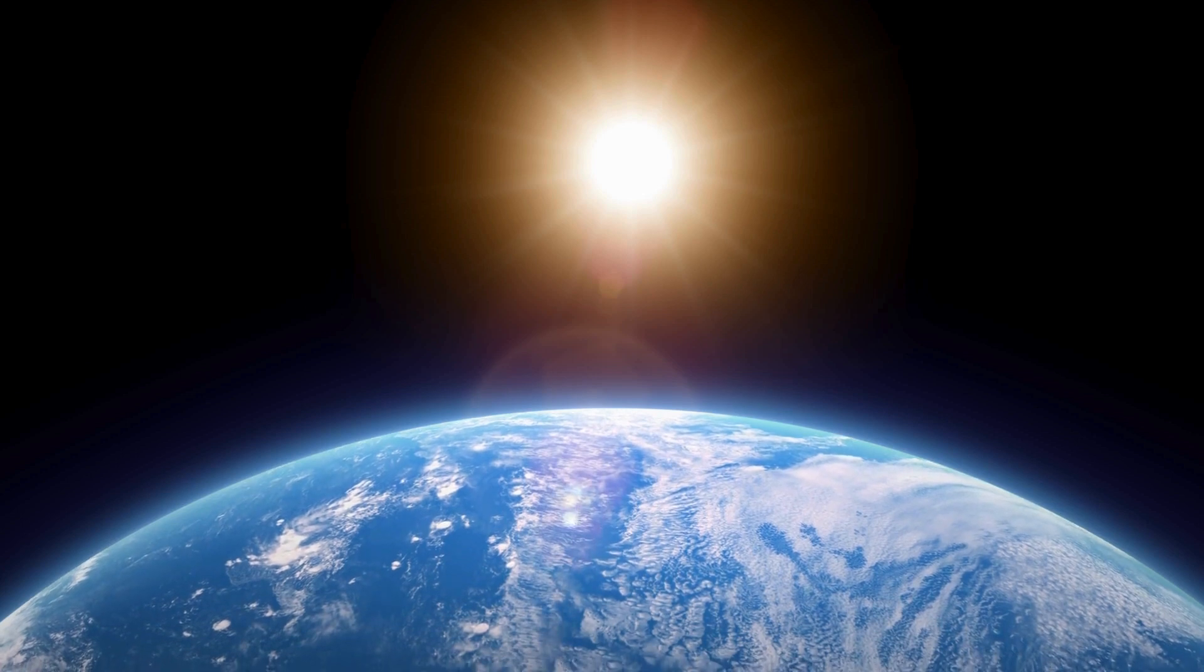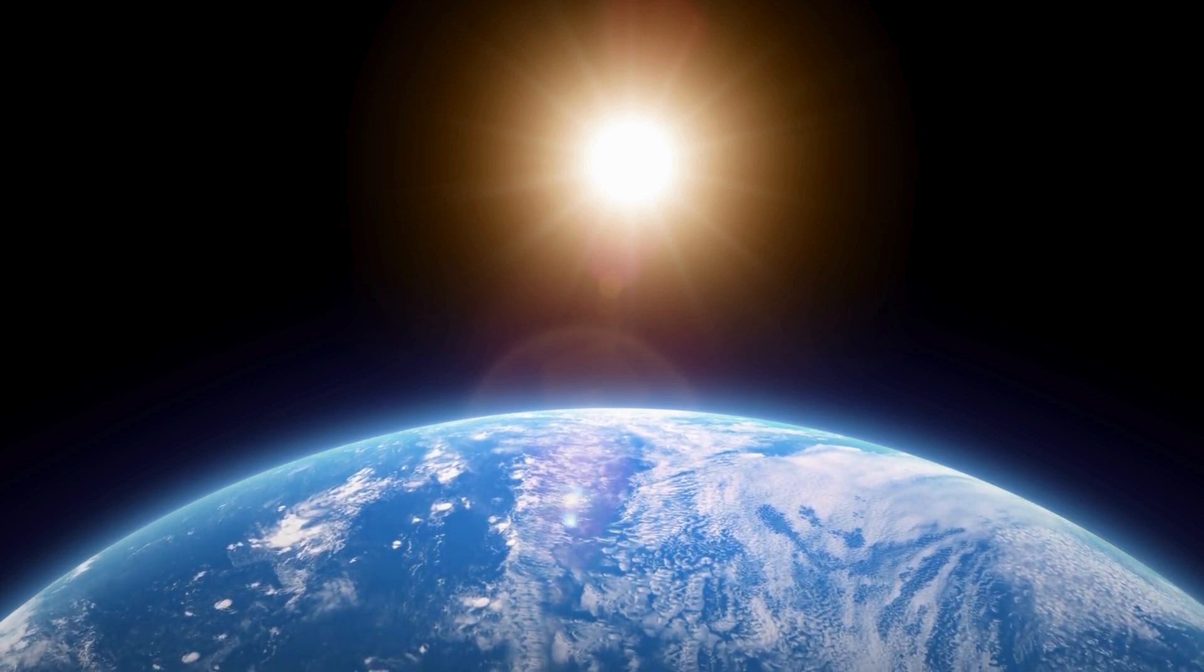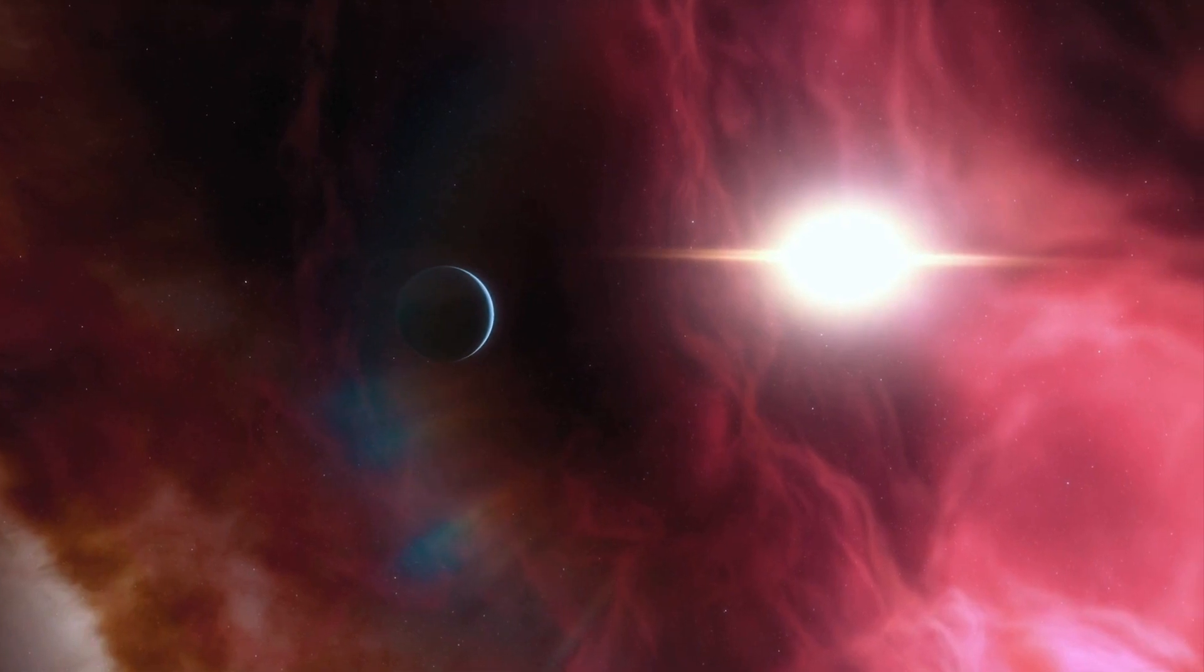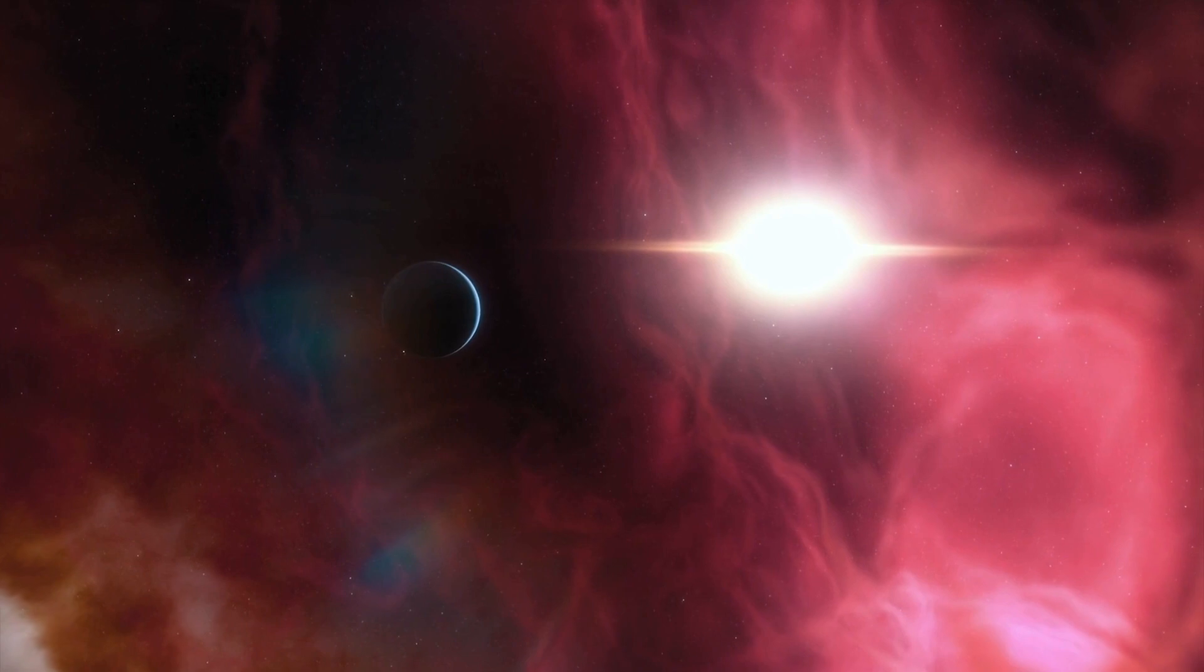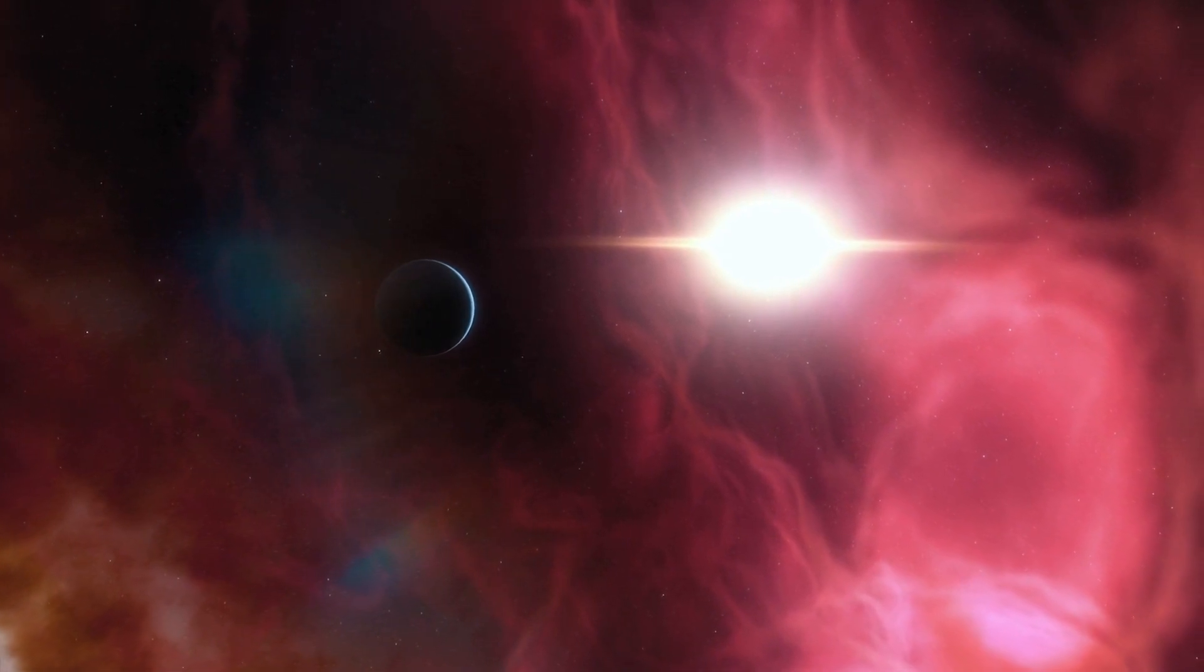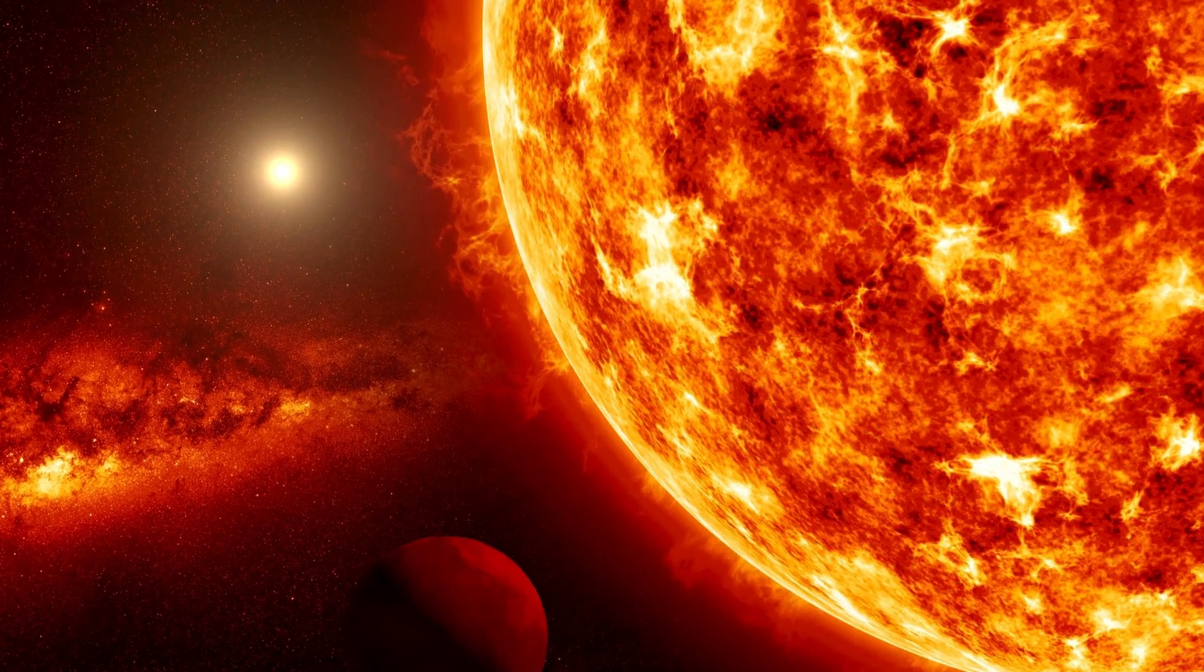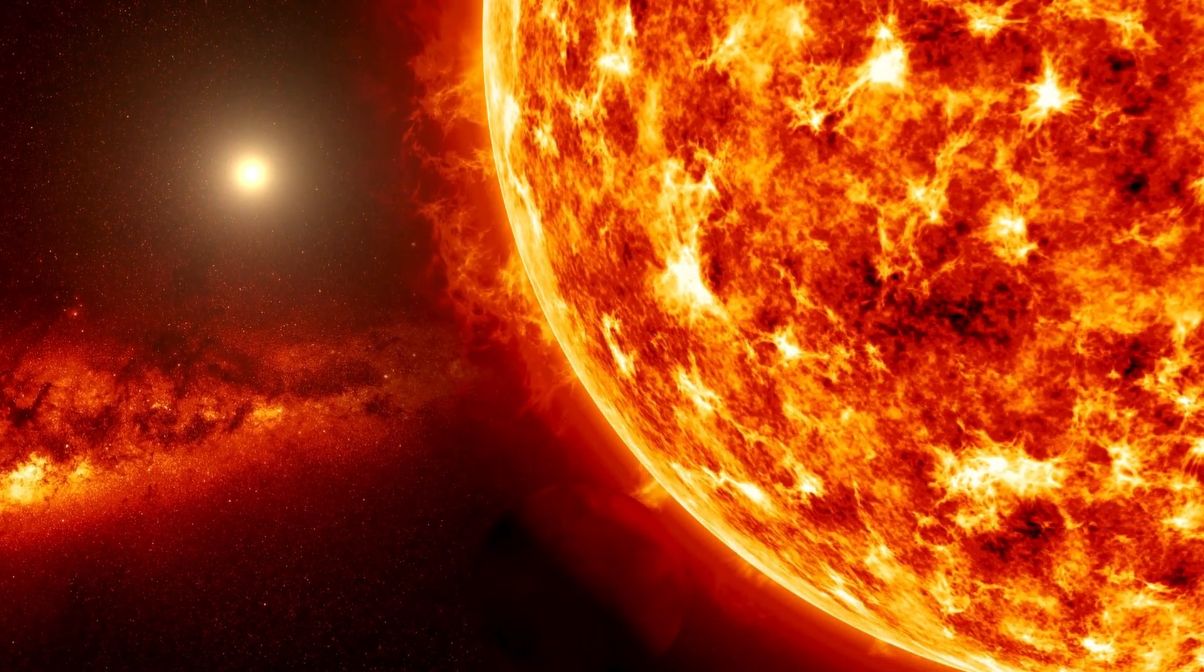What precisely is an exoplanet? An exoplanet is defined as a planet that orbits a star other than our Sun, which means it exists outside the bounds of our solar system. Among the exoplanets researchers have been exploring, none have drawn as much interest as Proxima b.